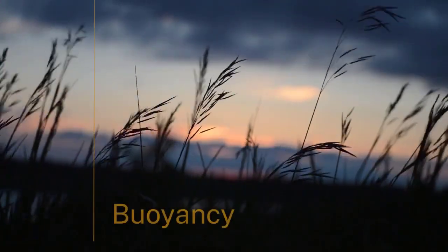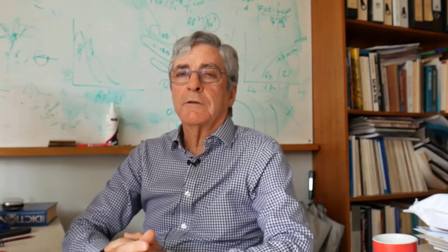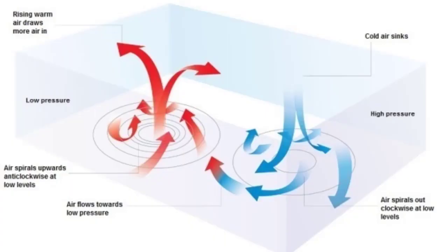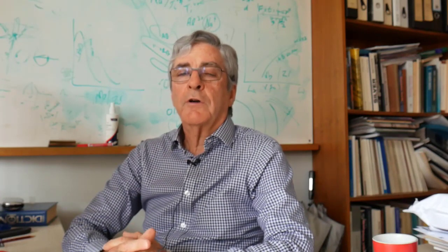But why are some areas in the atmosphere high pressure and others low pressure? And the reason is buoyancy. So in low pressure areas the air is hot and moist and it's light and so it rises. In high pressure areas the air is dry and it's dense so it sinks. So it's buoyancy that causes those pressure differences. And when you think about natural processes and you go back to the root cause it's invariably buoyancy.